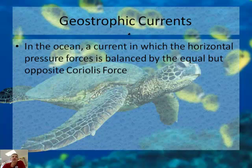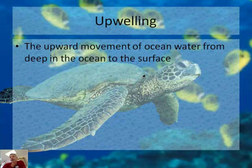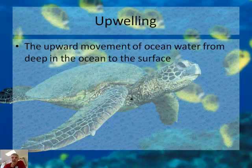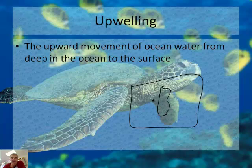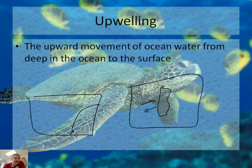This leads us to geostrophic currents — a current in the ocean in which the horizontal pressure force is balanced by the equal but opposite Coriolis effect. And one interesting result of all this is something called upwelling: the upward movement of ocean water from deep in the ocean to the surface. Normally we talk about currents going horizontally, but here we're talking about water moving from the bottom of the ocean to the top.